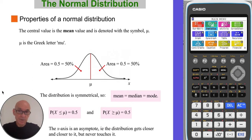The central value of a normal distribution is the mean value and is denoted by the Greek letter mu. The distribution is symmetrical, so the mean value is also the median value is also the modal value.